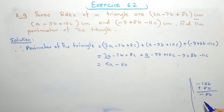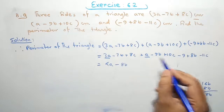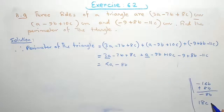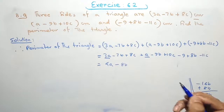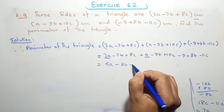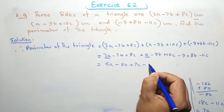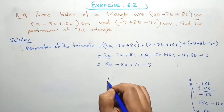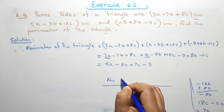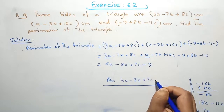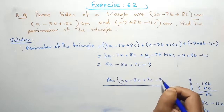For the c terms: 8c is positive and 10c is positive, giving 18c, minus 11c equals positive 7c. The constant value is only minus 9. Therefore, the answer is 4a minus 8b plus 7c minus 9, in centimeters.